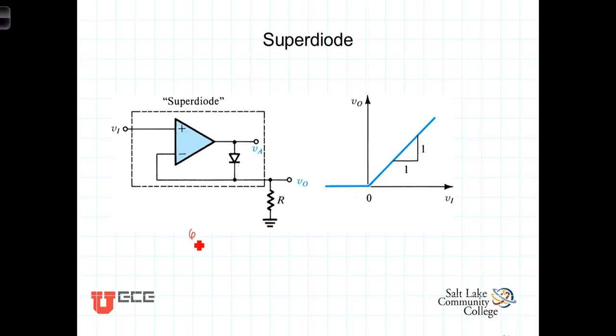This circuit here, known as the superdiode, addresses that issue. It's basically a buffering amplifier or a voltage follower amplifier where the feedback loop contains a diode. Thus, when the output voltage is positive, meaning that the input voltage is positive, the diode is conducting and we've got negative feedback.